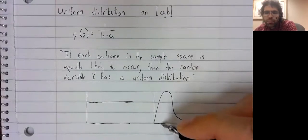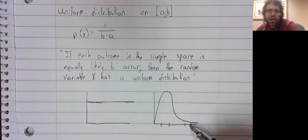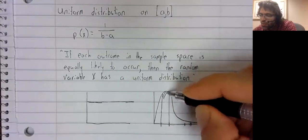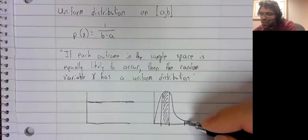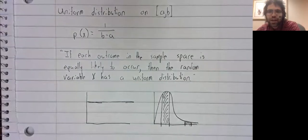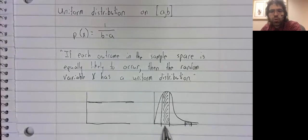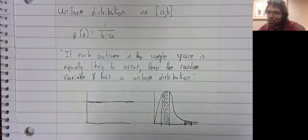if you select a number at random and look at these two equally sized intervals, this area is significantly greater than that area. So the number you select at random is much more likely to be in this interval than in this interval.